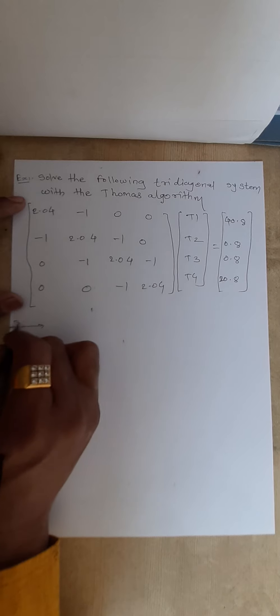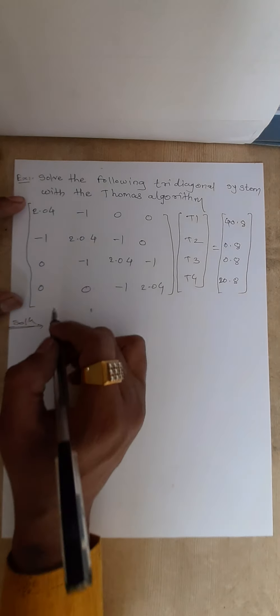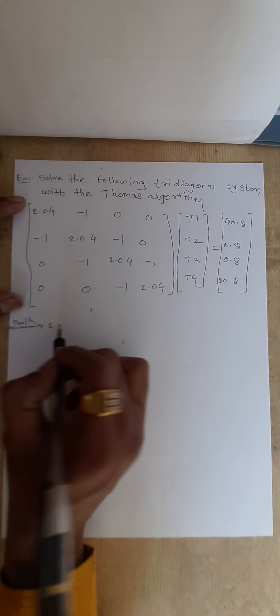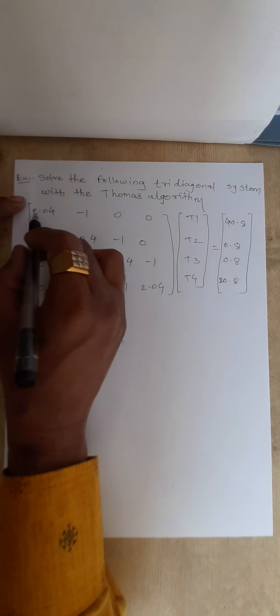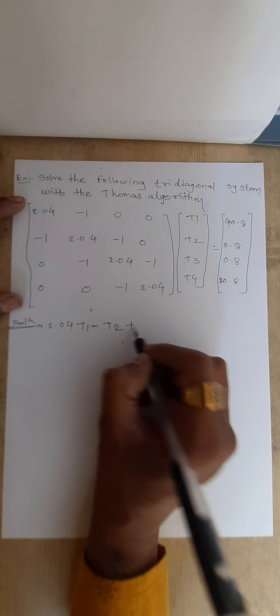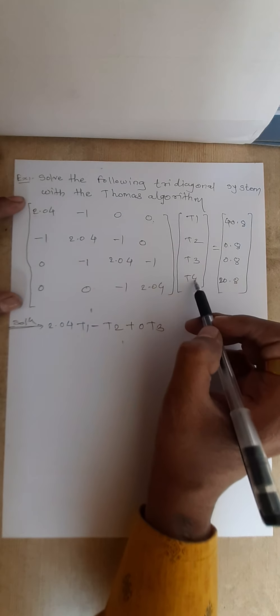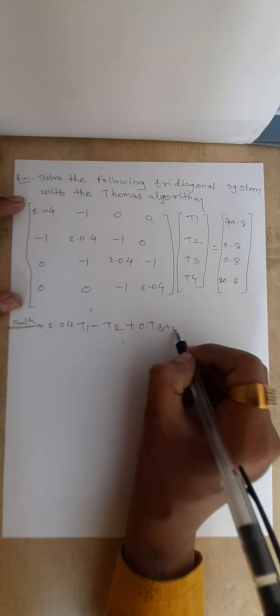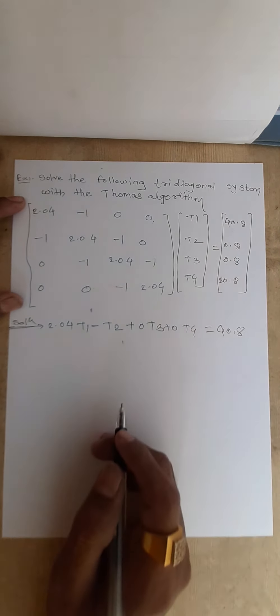The first step is to write down the given matrix form into equation form. The first equation is: 2.04 T1 minus T2 plus 0·T3 plus 0·T4 equals 40.8.